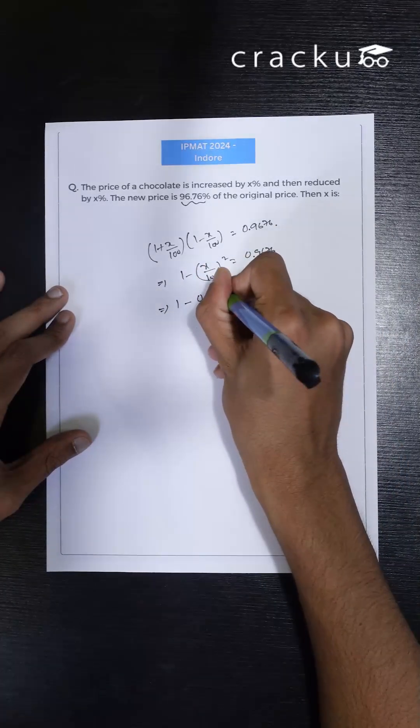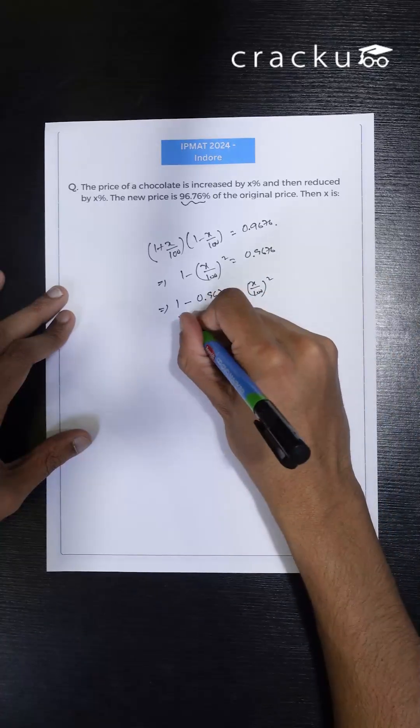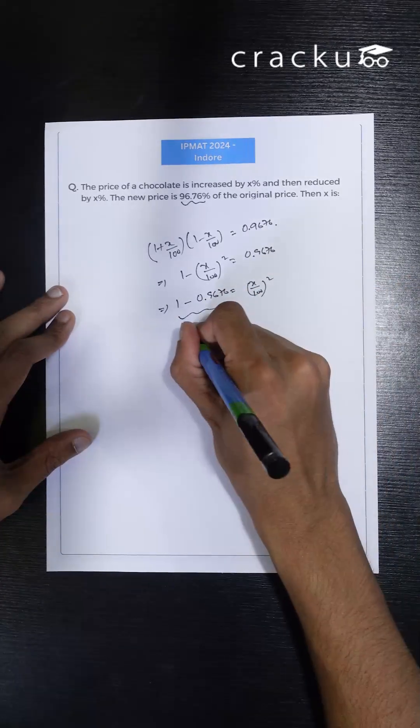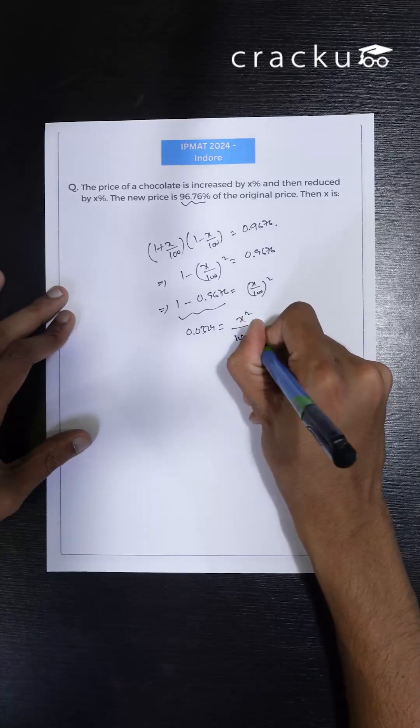Now 1 minus 0.9676 equals to x by 100 square. Now 1 minus 0.9676 is 0.0324. This equals to x square by 100 into 100.